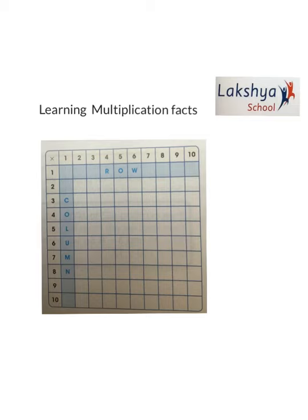Let's solve the first row by taking the number 1 in the first column. One multiplied by one gives me 1, one multiplied by two gives me 2, then one three's are 3, one four's are 4, five, six, seven, eight, nine, and ten.